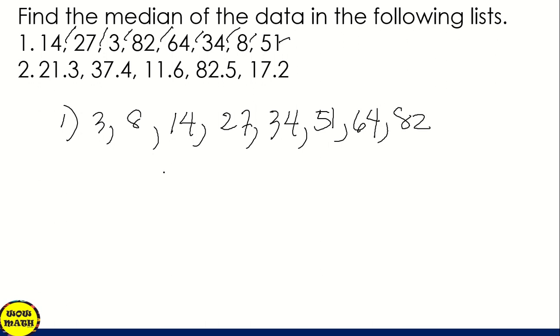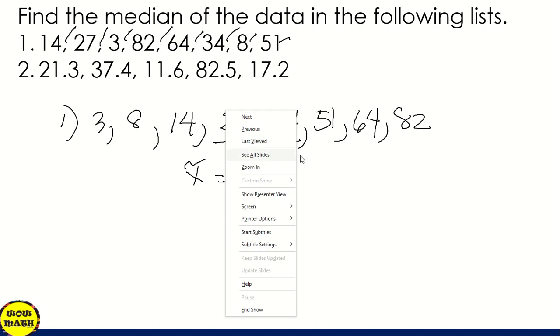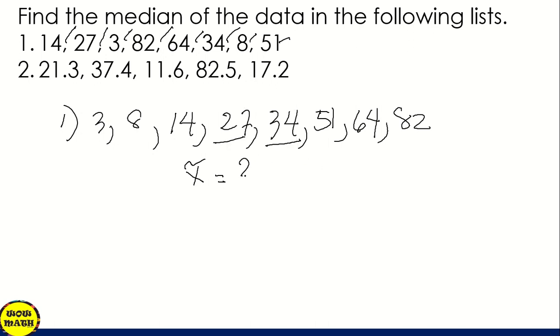So what are the two middle values? That is 27 and 34. When it's even number, we have two middle values, so we add the two middle values. To get it, 27 plus 34.